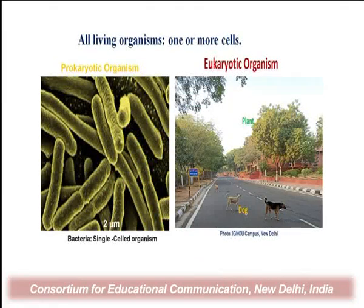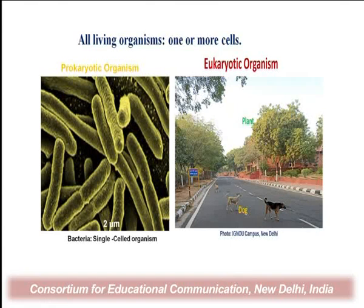All living organisms are made up of one or more cells. Prokaryotic organisms are unicellular, meaning they are made up of a single cell. Eukaryotic organisms — such as dogs and plants — are made up of eukaryotic cells and have many cells.